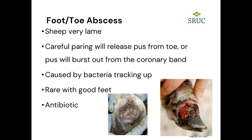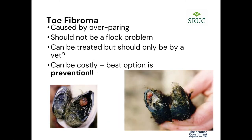Foot and toe abscesses can make sheep very lame, but you'll see one area that's very swollen or draining pus. It usually bursts out and is caused by bacteria tracking up through a tract in the sole. It's quite rare with good feet. Treatment is often by antibiotic, though you can carefully pare just to widen the hole that the pus is already draining from. Toe fibromas are caused by overparing — a bit of proud flesh sticks out preventing the hoof from closing. Treatment must only be by a vet and can be costly, so prevention — meaning not overparing in the first place — is the best option.